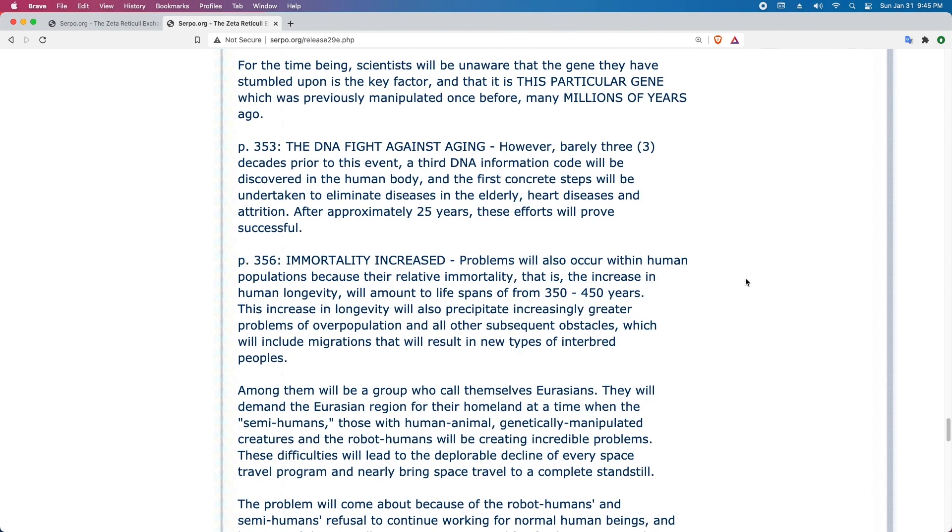Page 353. The DNA Fight Against Aging. However, barely three decades prior to this event, a third DNA information code will be discovered in the human body and the first concrete steps will be undertaken to eliminate diseases in the elderly, heart diseases, and attrition. After approximately 25 years, these efforts will prove successful.